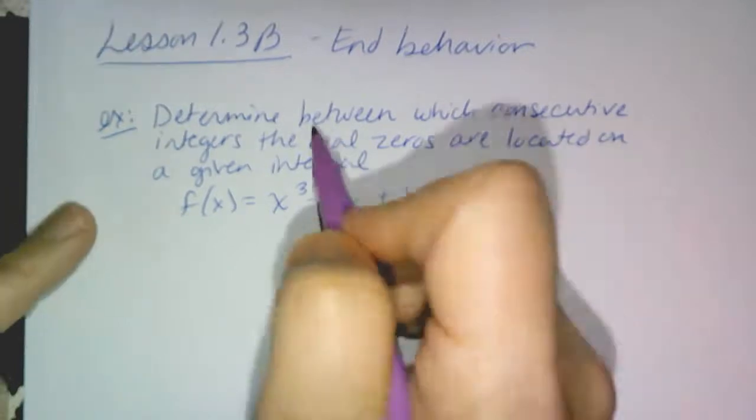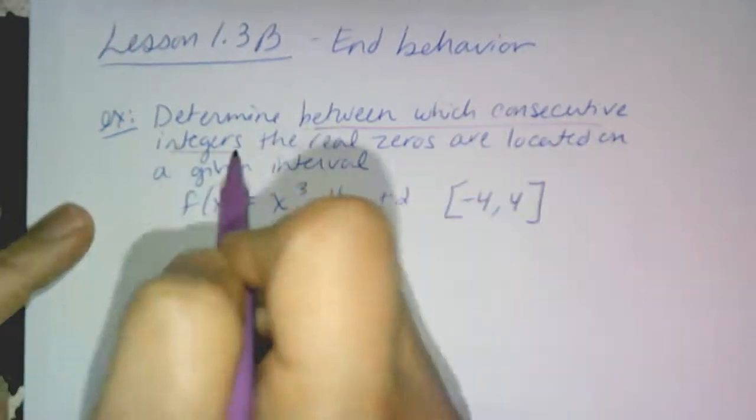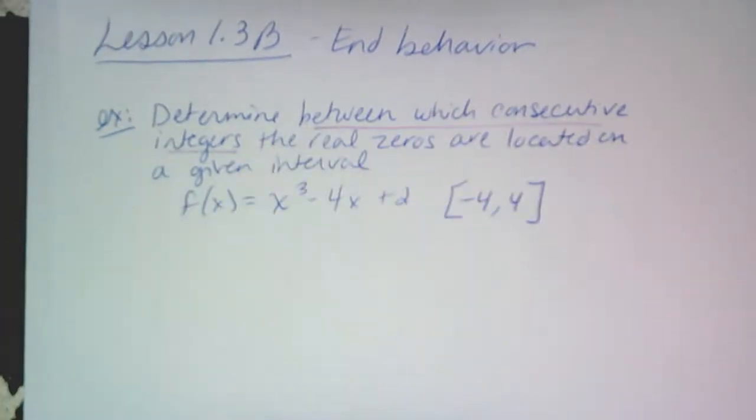I'm asking you to determine between which consecutive integers the real zeros are located. If you don't know what a consecutive integer is, like 2, 3, 4, 5, negative 10, negative 11, what are consecutive integers? I just gave you examples. Numbers right next to each other. A whole integer next to a whole integer. No decimals, just between integers. Two whole numbers.